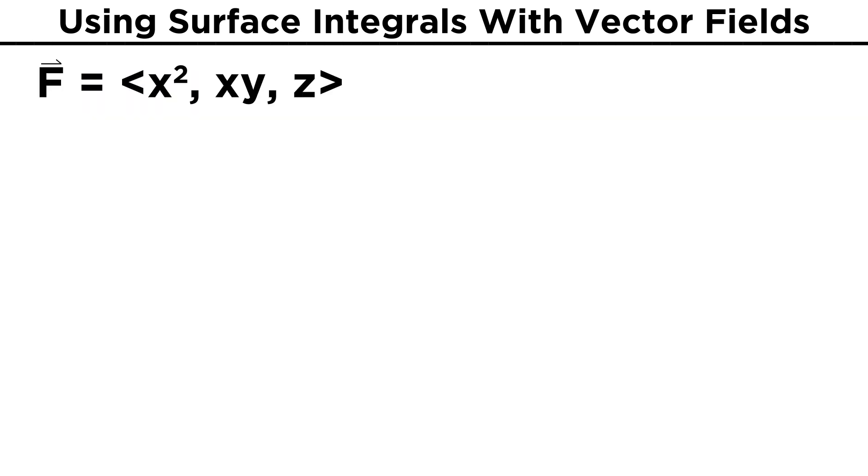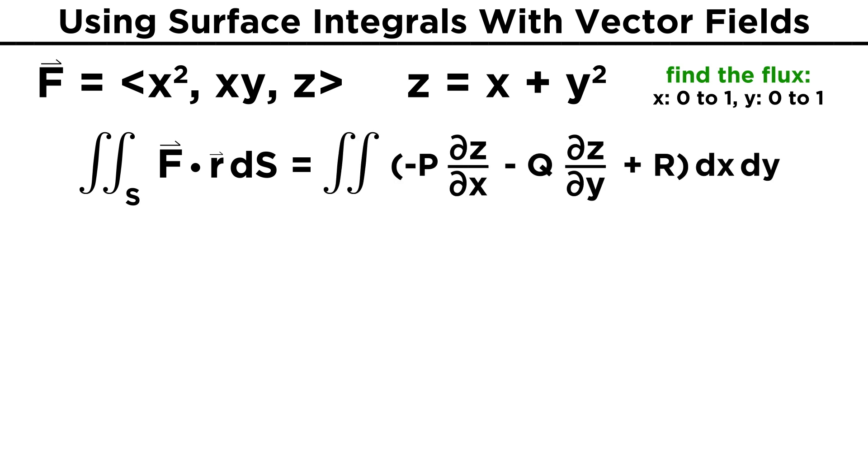For a complete example, consider the vector field F equals X squared, X Y, Z, and the surface given by Z equals X plus Y squared. Let's find the flux of the field through this surface over the range X from zero to one and Y from zero to one. Since the surface is given as a function of X and Y, we can jump to expressing our surface integral as the double integral of negative P dZ dX minus Q dZ dY plus R dx dY. Here P is X squared, dZ dX is the X derivative of X plus Y squared, which equals one. Q is X Y, and dZ dY will be the Y derivative of X plus Y squared, so two Y. And R is Z, which in terms of X and Y is X plus Y squared.